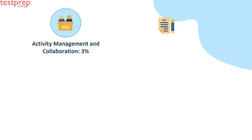Activity Management and Collaboration, 3%: First, describe the capabilities of activity management — for example, manage tasks, events, public calendars, and multi-day events. Second, describe the features of Chatter — for example, feed, groups, following, and security.